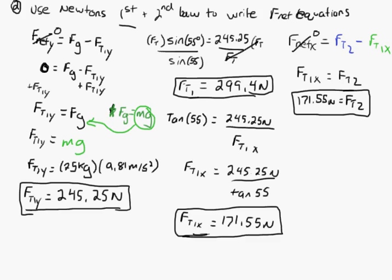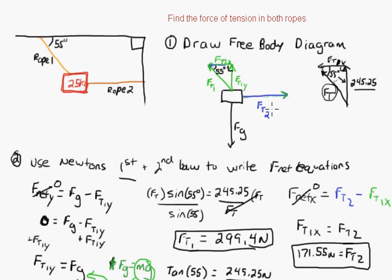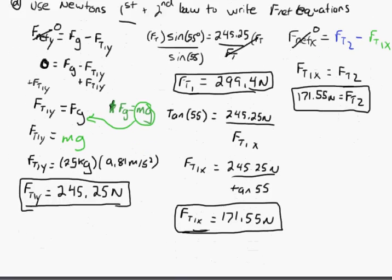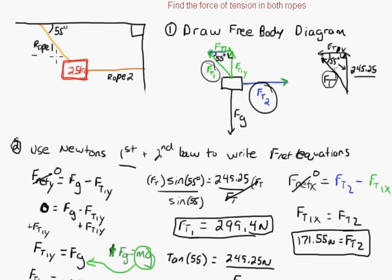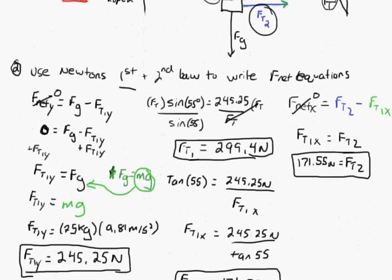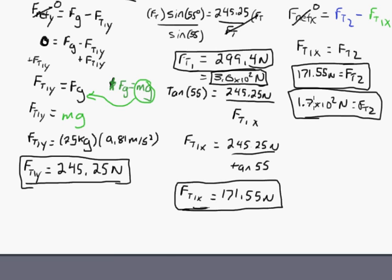So this question asked for the force of tension in both ropes. Rope two has force tension two = 171.55 N, written with proper significant digits as 1.7 × 10² newtons. Rope one has force tension one = 299.4 N, written as 3.0 × 10² newtons. That is the final answer.